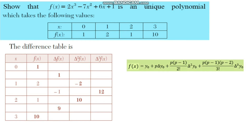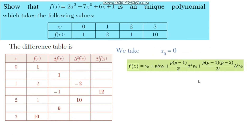The forward differences are computed: for example, 2 minus 1 = 1, 1 minus 2 gives -1, and 10 minus 1 = 9, giving third differences of 10, 10 minus 12, etc. We take x₀ = 0 and h = 1 (since 1 minus 0 = 2 minus 1 = 3 minus 2 = 1). The value of p = (x minus x₀)/h = x/1 = x.